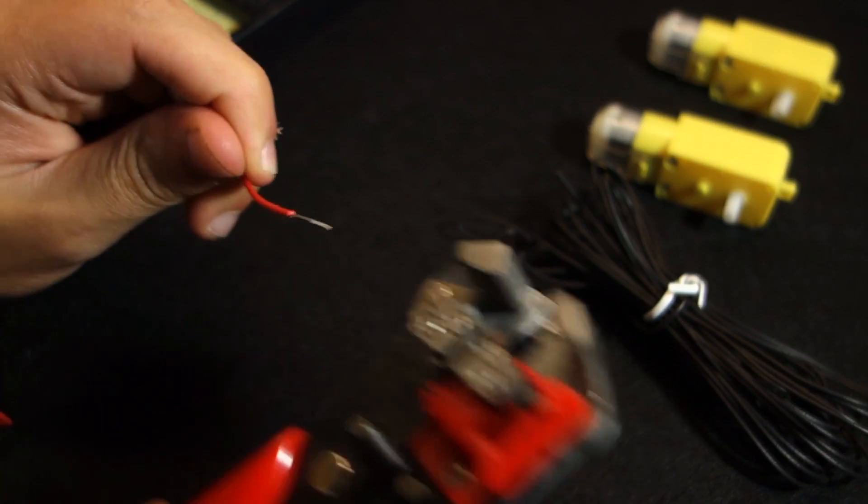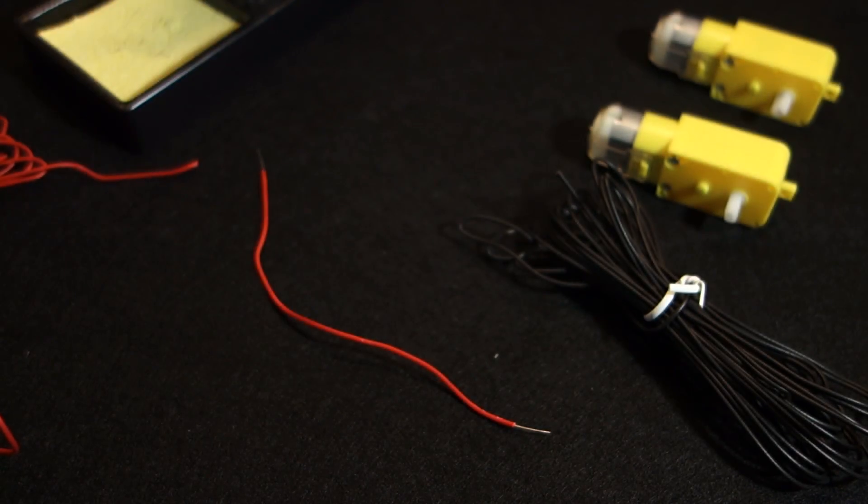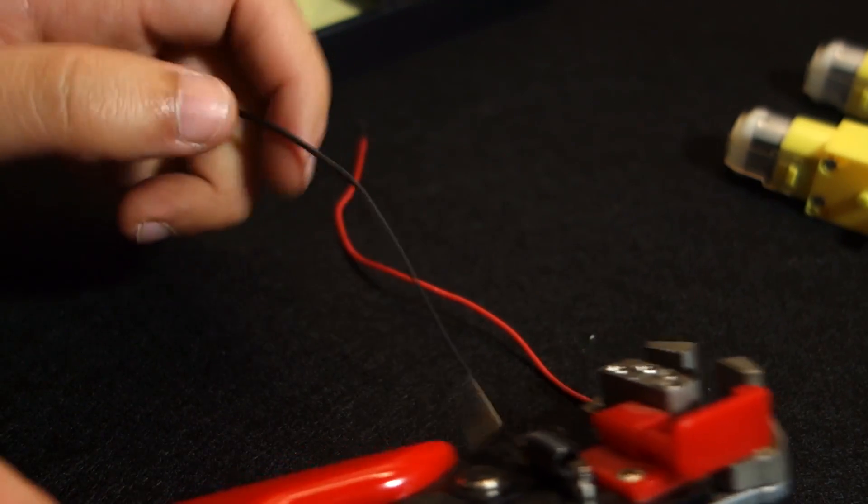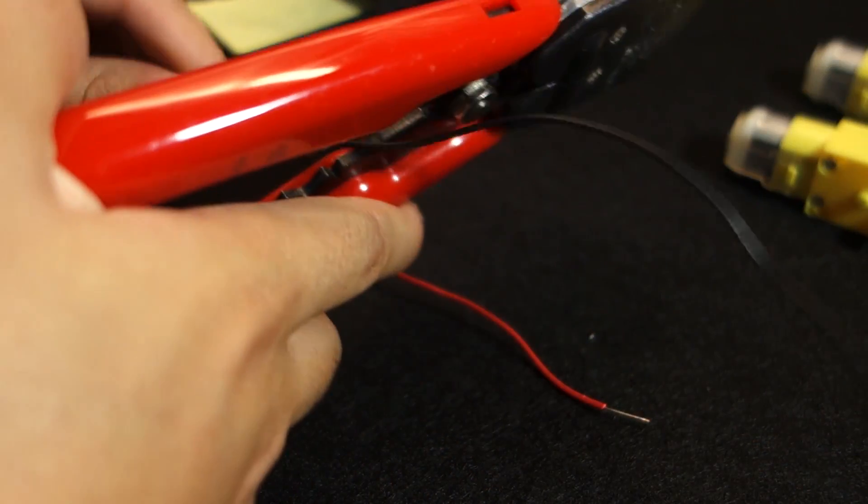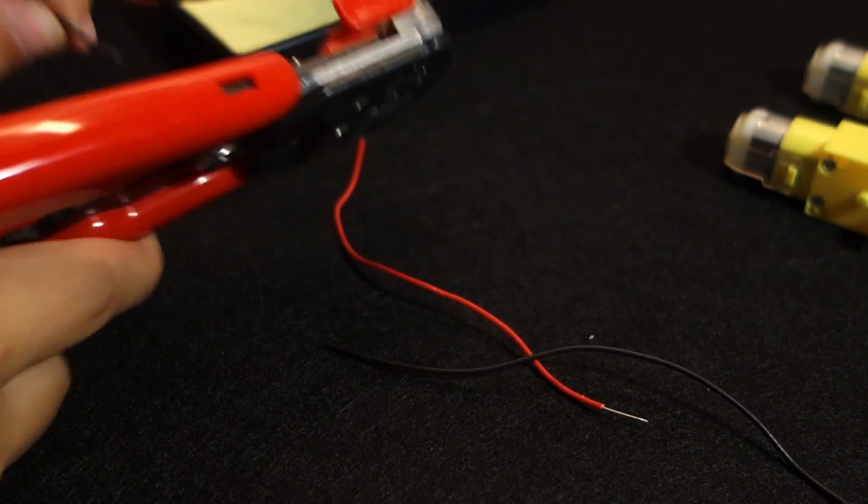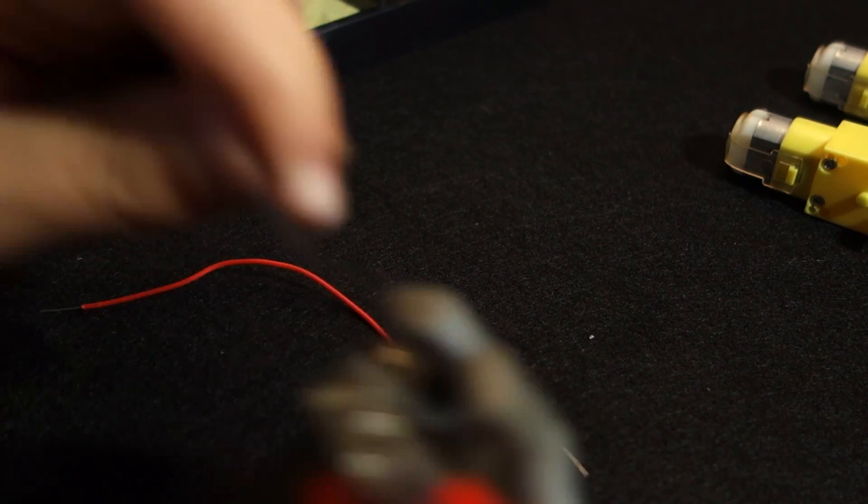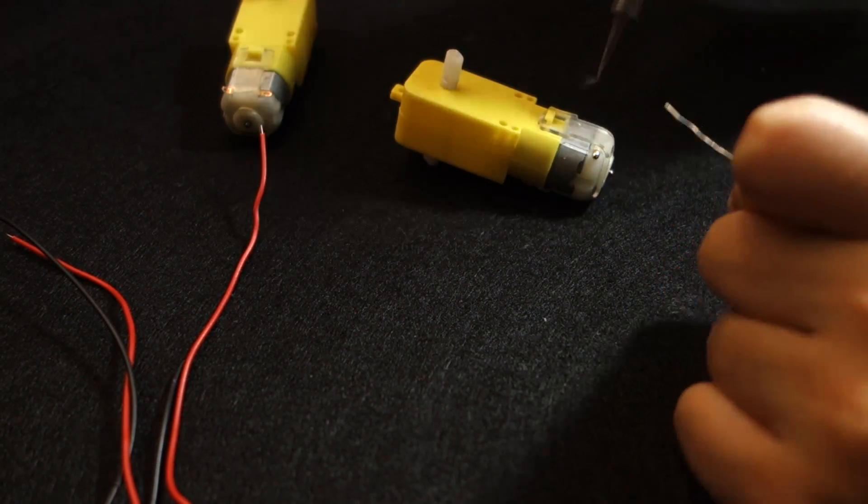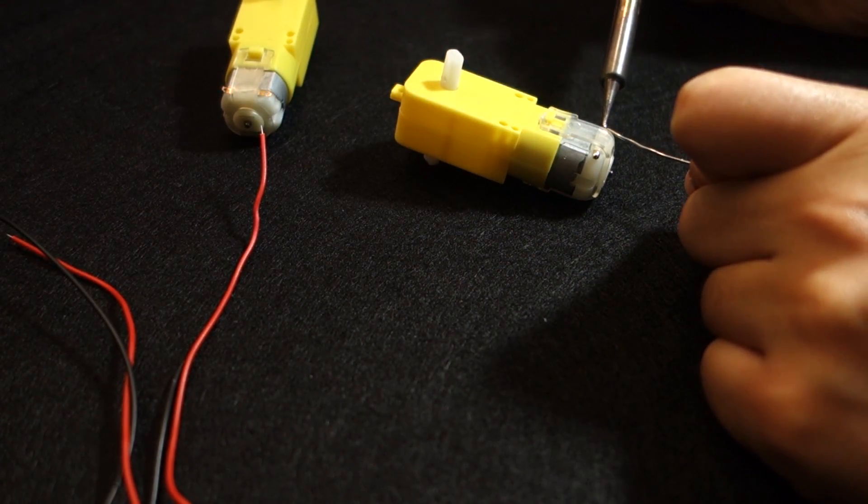You'll need one red wire and one black wire for each motor. You can use a wire cutter to cut the wires to your desired length. After preparing all 4 wires, you need to solder them to the DC motors.